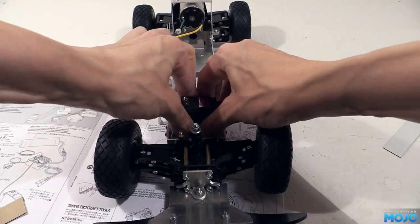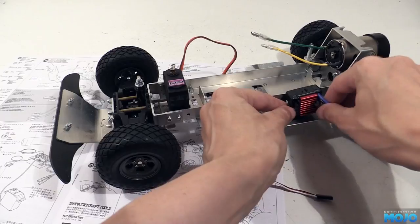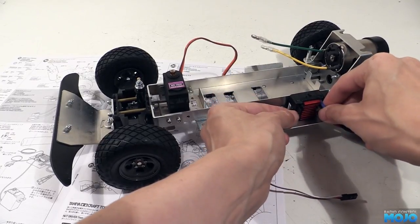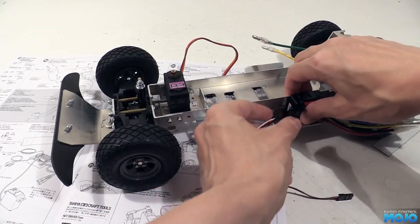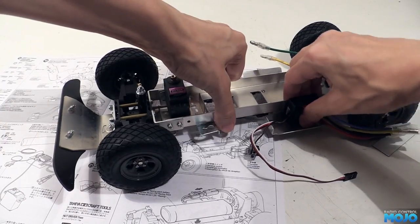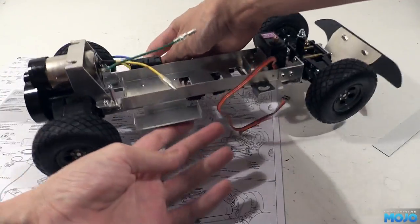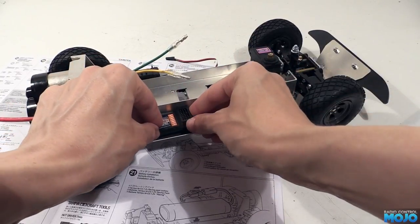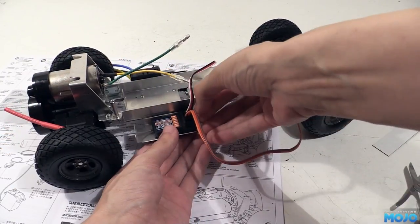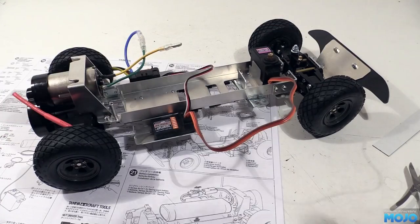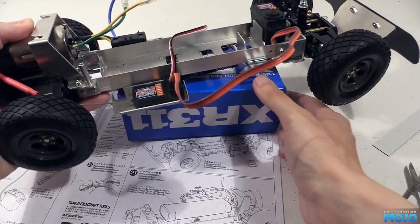The ESC gets some servo tape too, and sticks to one of the side bits, making sure all the wires reach where they need to. The switch is miles too short, so we'll have to come up with something there when the body goes on. The receiver goes on the other side. Steering servo to channel 1. ESC to channel 2. Plug in one of the motor leads. Put the chassis on a box to keep the wheels off the ground.